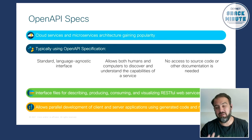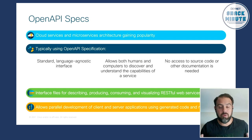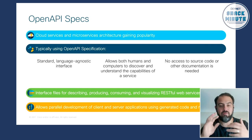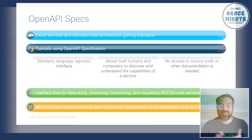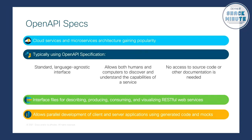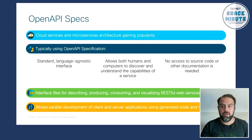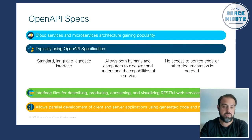We don't need to necessarily access the source code or other documentation beyond what is defined within the OpenAPI spec. Ultimately, it's building out interface files for the entire gamut — describing, producing, consuming, and visualizing RESTful web services. It allows us to build the client consumption portion and the server applications using generated code and, for testing purposes, mock applications as well. So it hits us from the concept of design through testing to production and deployment.